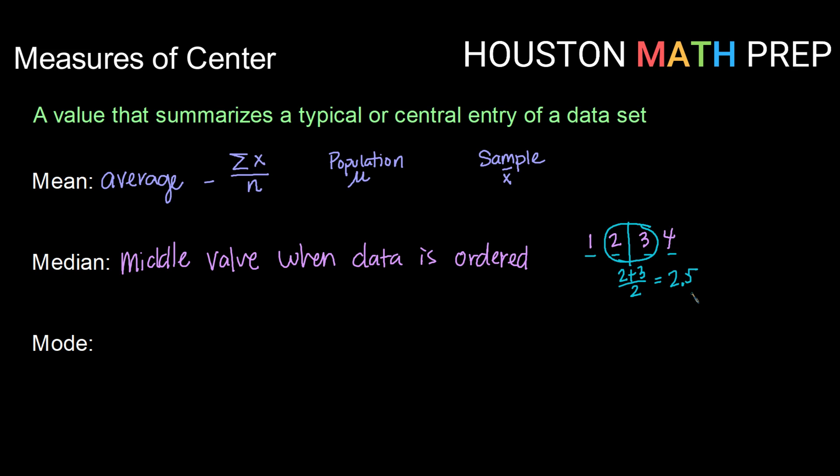All right, and our last measure of center is the mode. Mode is the data value, or technically could be values, that occur most often. So simply put, we look at our data. If there is one or a few data values that occur the most frequently, then that is the mode.